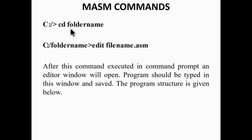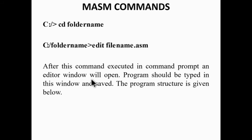MASM commands: cd [folder name] — change to the folder where the program is stored. cd masm — change to the masm directory. Then: edit [filename].asm — after this command is executed in the command prompt, an editor window will open where you write the program instructions. The program should be typed in this window and saved.